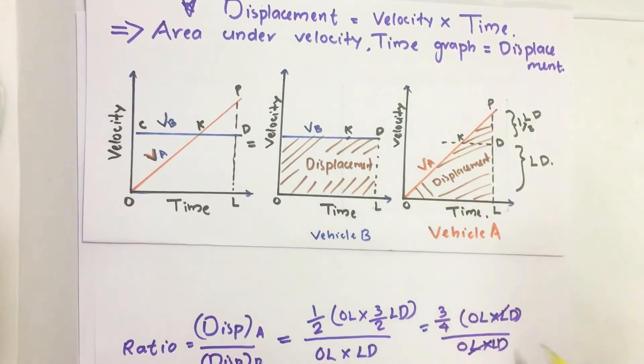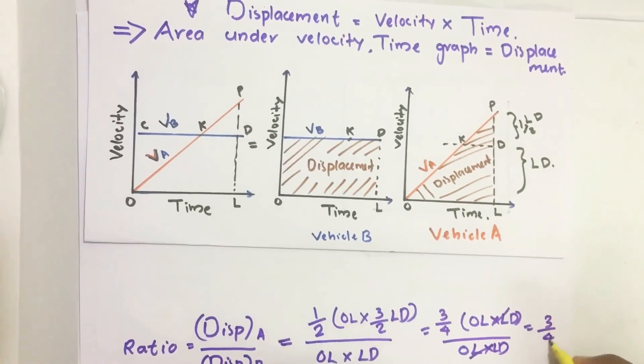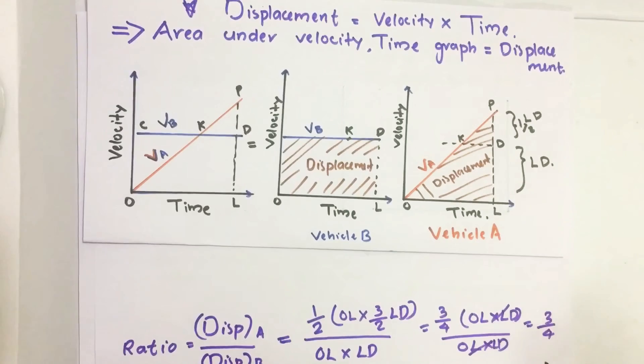This OL into LD and OL will cancel, so we get 3 by 4, or we can write this as 3 is to 4.